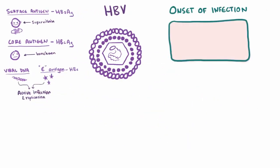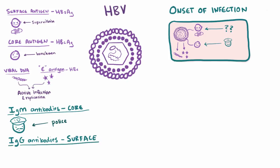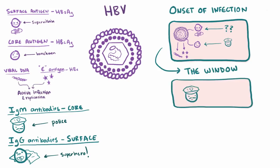At the onset of infection during the acute phase, HBsAg will be present, and the virus will be pumping out both viral DNA and E antigen. The immune system produces IgM antibodies against the core antigens — like a police force against the henchmen. However, to actually defeat the virus, you need to target the surface antigen. The host then enters a 'window phase' where neither HBsAg nor the IgG anti-surface antibody can be detected because both are very low, lasting several weeks to months. The only detectable marker during this stage is the IgM core antibody.